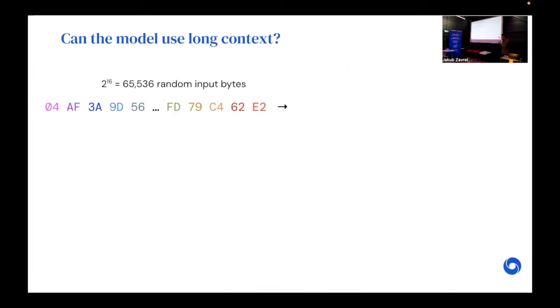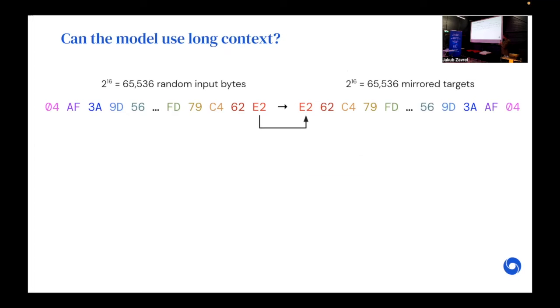Just a probe to make sure that the model can actually use long context, we tried it on a very simple random byte copy task. What we're looking at here is 65,000 random input bytes that we then mirror. We train the model to recapitulate the input as the output. What we found here is that the model was able to get perfect performance on 2 to the 17 inputs. Basically, the maximum copy distance here is 130,000. It's able to perfectly do this prediction. So the model is able to effectively use this long context.